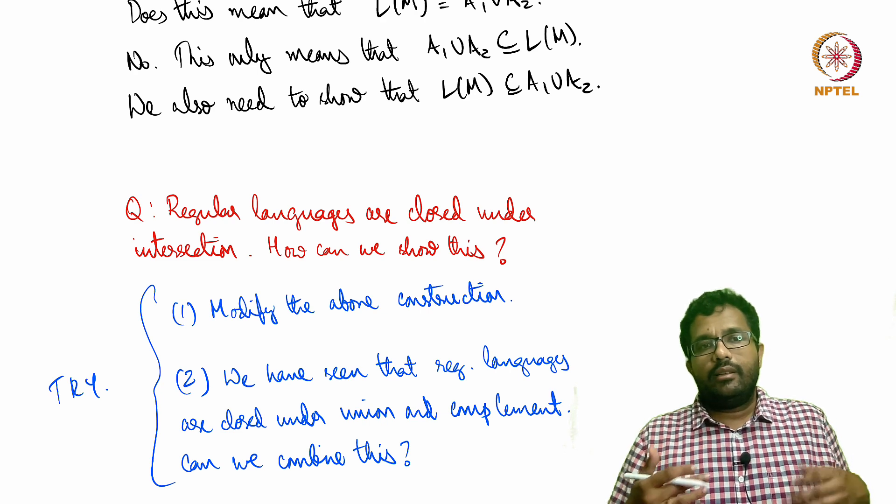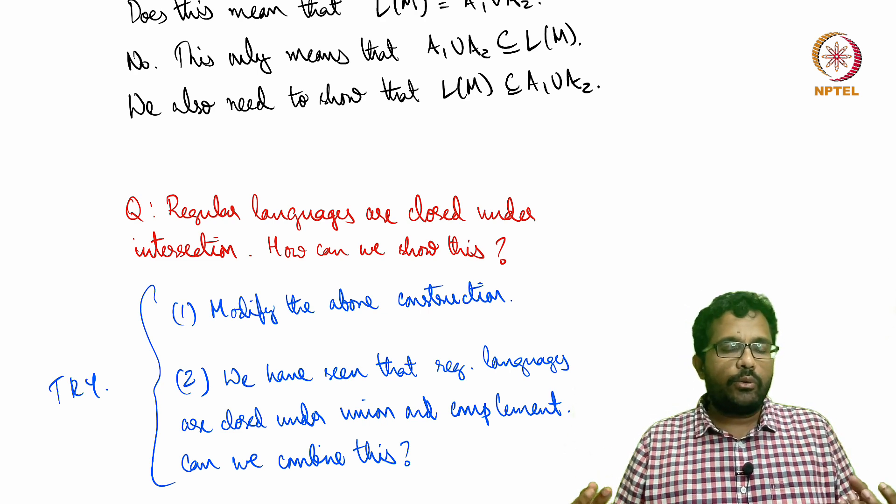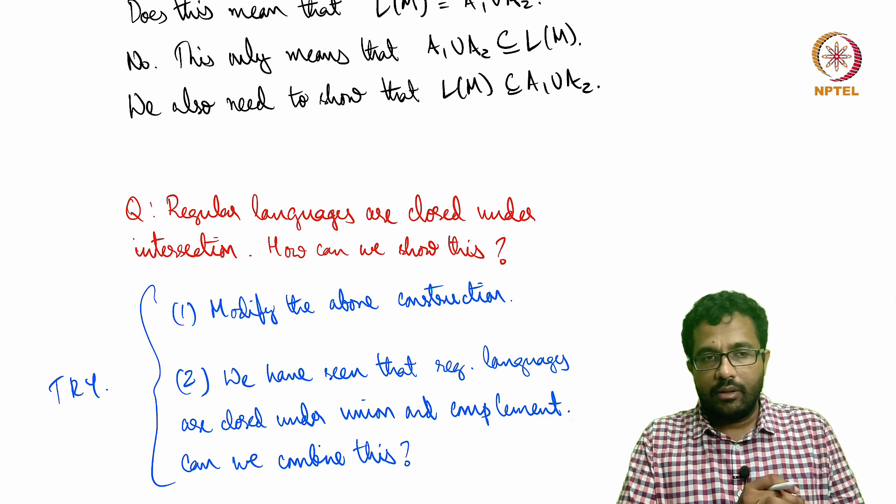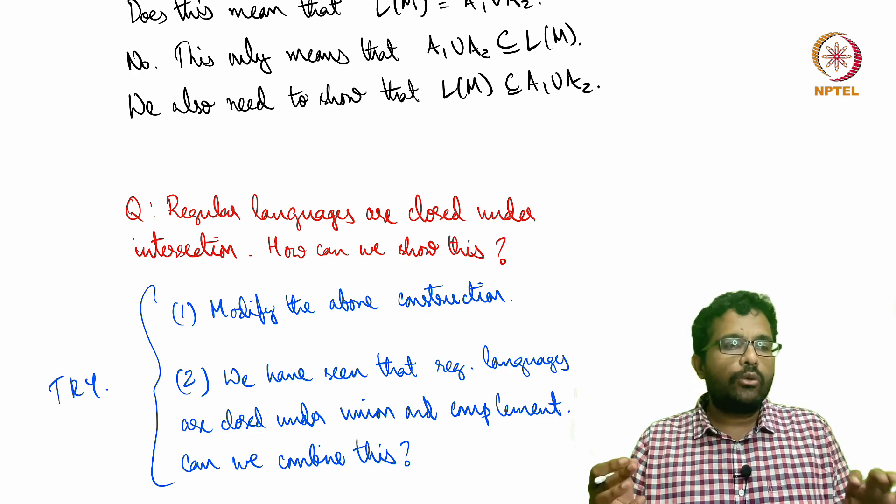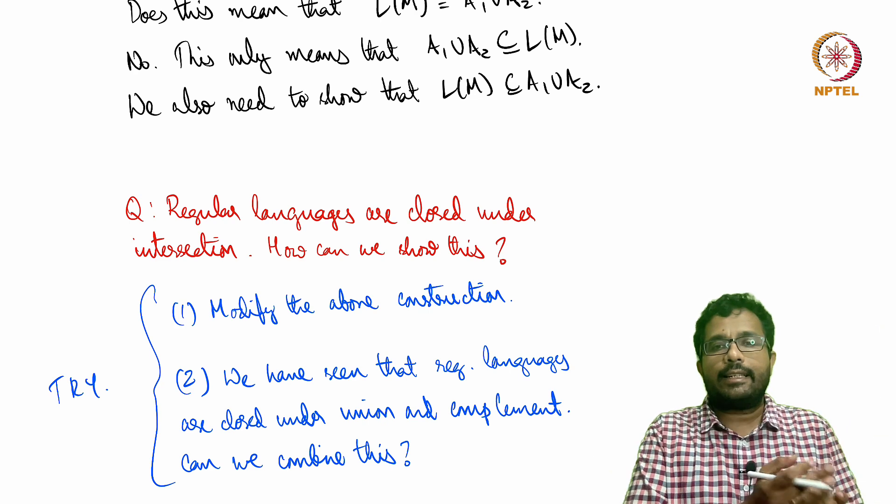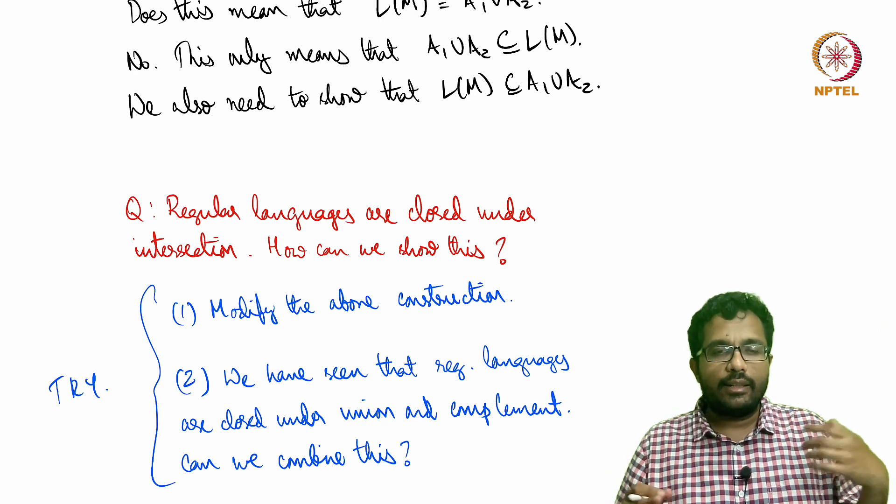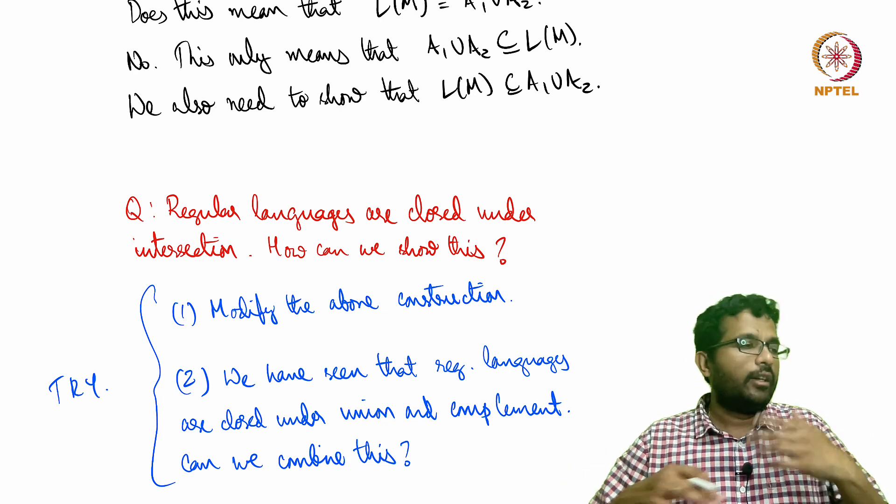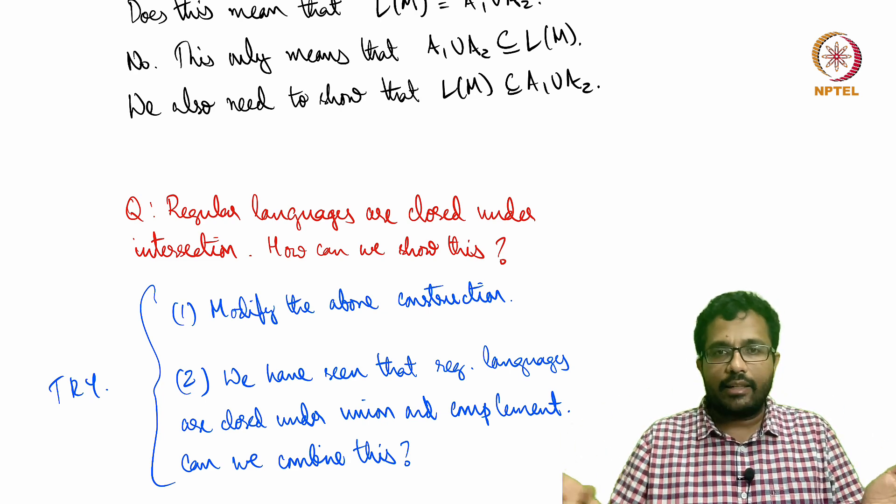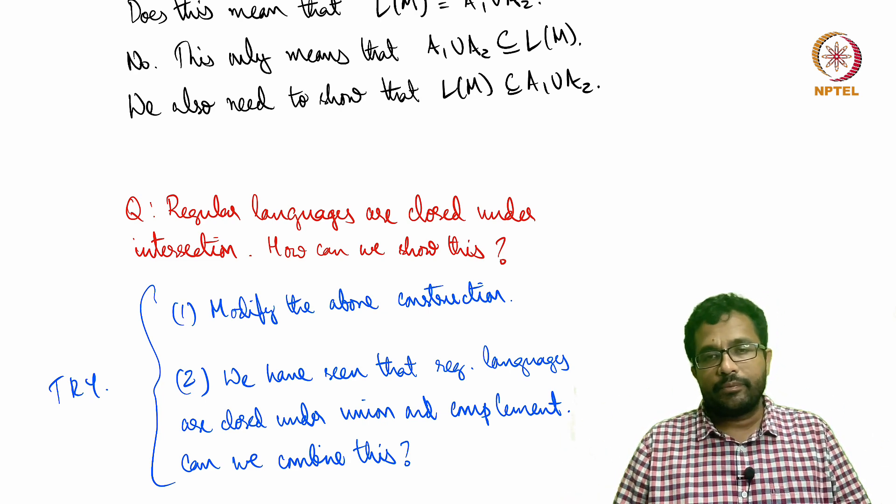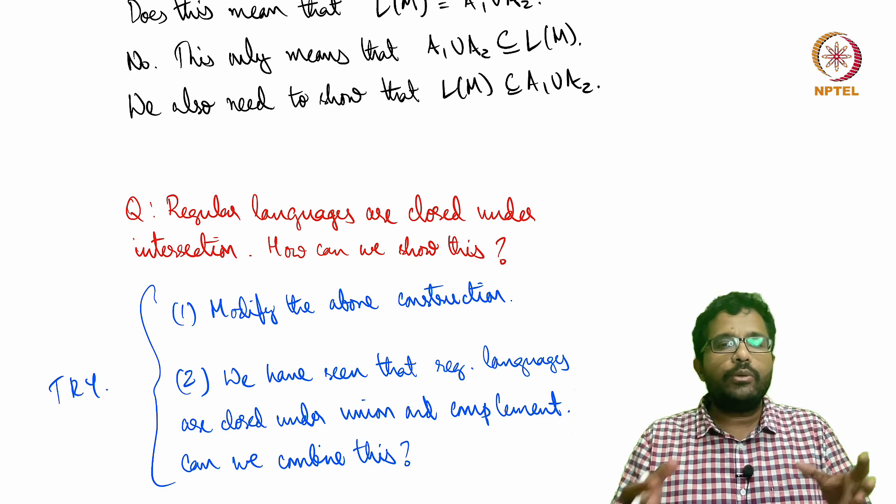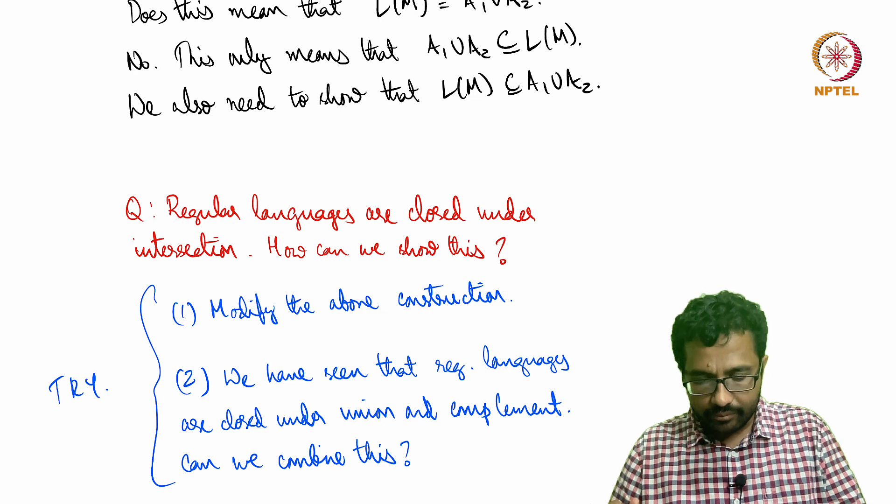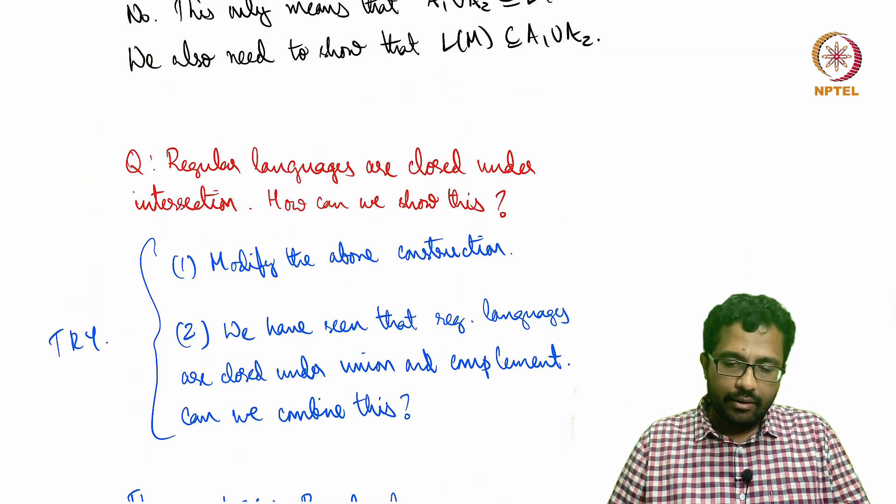Suppose A1 and A2 are there, we want to get a DFA that recognizes A1 intersection A2. We know that there is a DFA that recognizes the union, we know that there is a DFA that recognizes the complement of A1, complement of A2, and complement of anything else that is also regular. Can we combine this to infer that regular languages are closed under intersection?